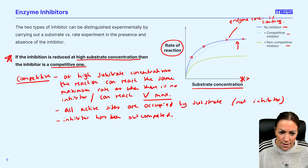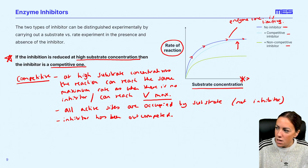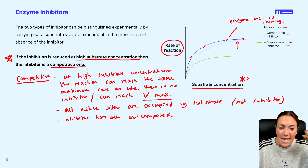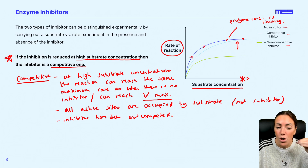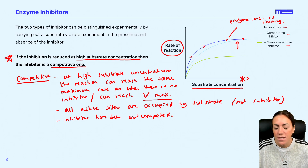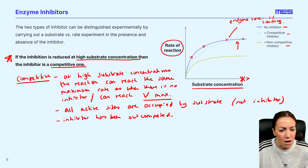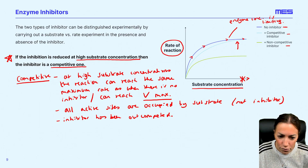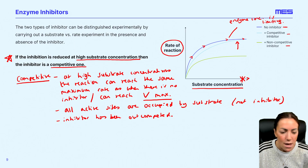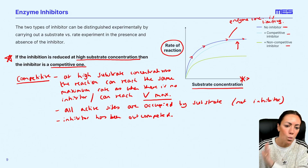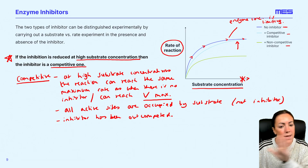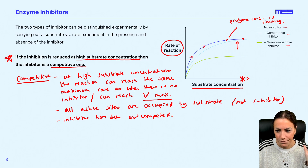When all active sites are occupied by substrate, you will reach the same maximum rate as if that inhibitor was not even there. So if you increase the substrate concentration and it's a competitive inhibitor, at high substrate concentrations the rate of reaction is no longer reduced because all enzyme active sites will be bound to substrate — it has out-competed the inhibitor.